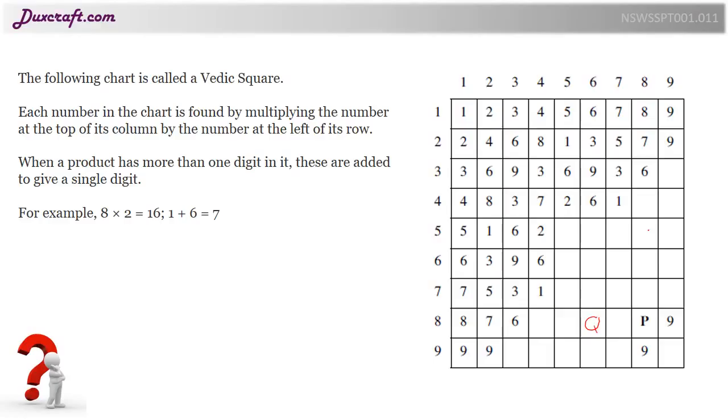It says that we multiply the 8 by the 6. So we have 8 multiplied by 6. What is that? We should know it's 48.